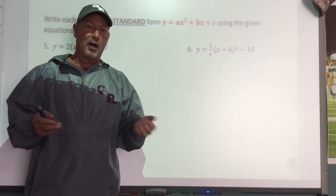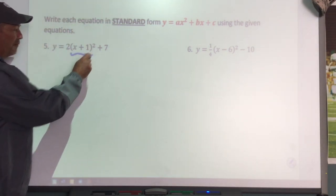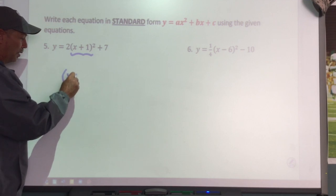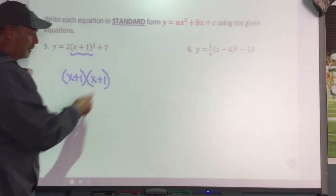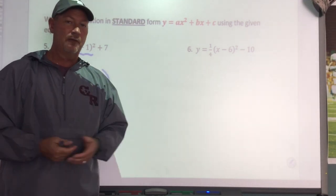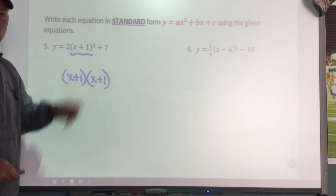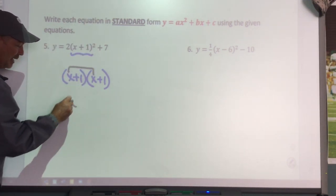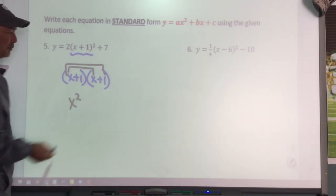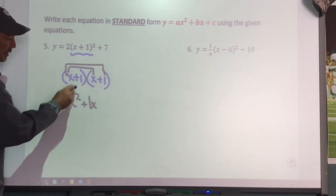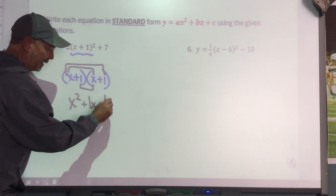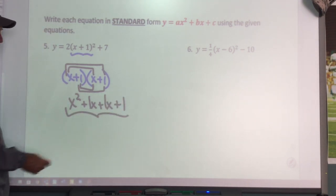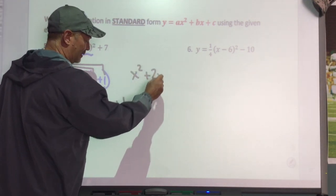I'm going to ask you to take care of your exponent first. I've got to take care of (x plus one) squared first, so that means I need to go (x plus one) times (x plus one). Box it or FOIL it. x times x is x squared, x times one is positive 1x, one times x is another positive 1x, and one times one is one. That gives me x squared plus 2x plus one.